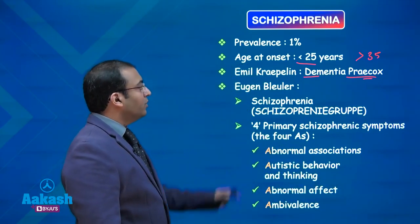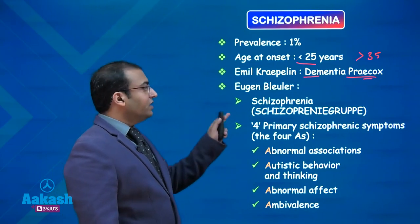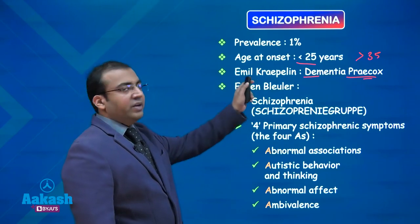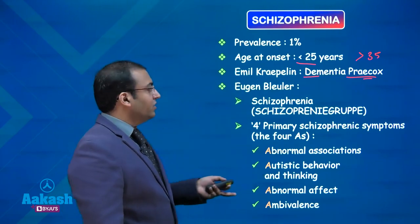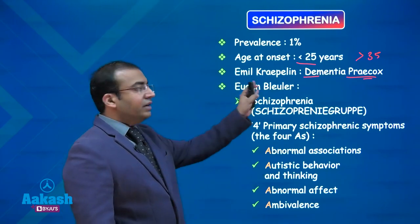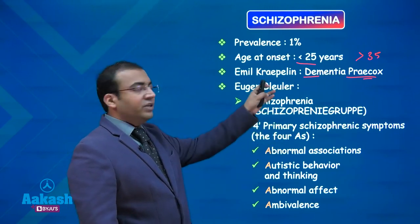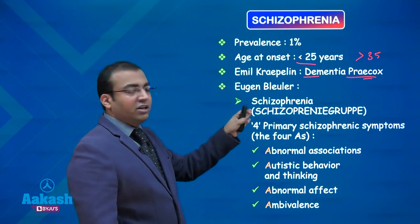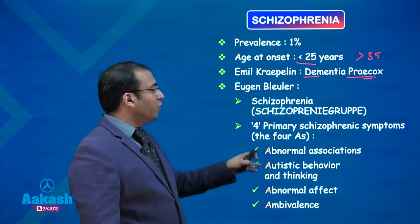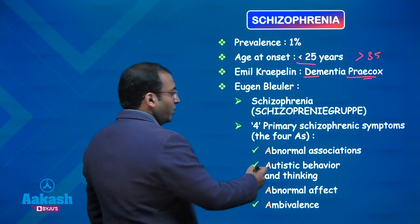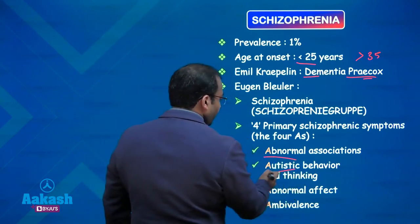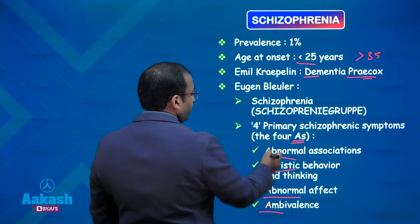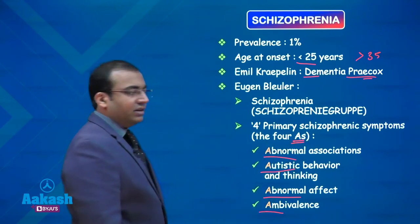The second is the Bleulerian concept, which is a better concept because it is based on real-time clinical observations from patient records over time. Bleuler gave the term schizophrenia and described four primary schizophrenic symptoms: abnormal associations, autistic behaviour, abnormal affect, and ambivalence — the Four A's, which can be remembered easily in that order.